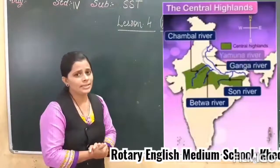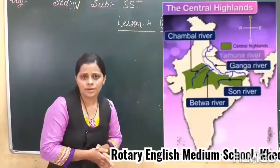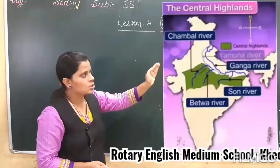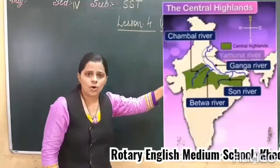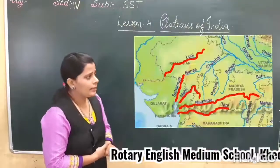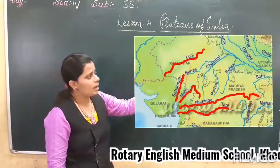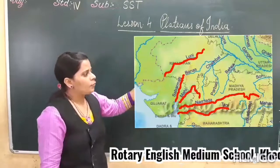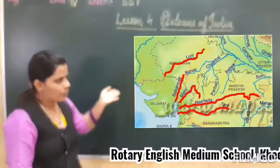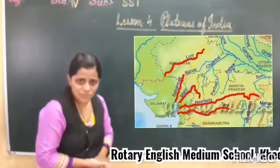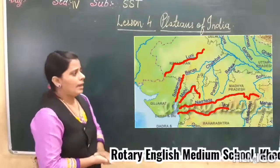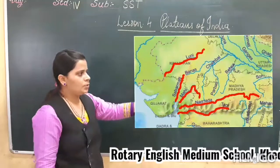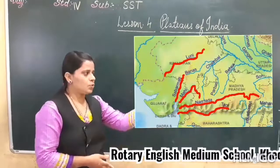These small rivers join the big rivers — the Ganga and Yamuna — in the northern plains. And the next rivers, Narmada and Tapti, originate in the Vindhya Range and they flow westward and flow into the Arabian Sea.